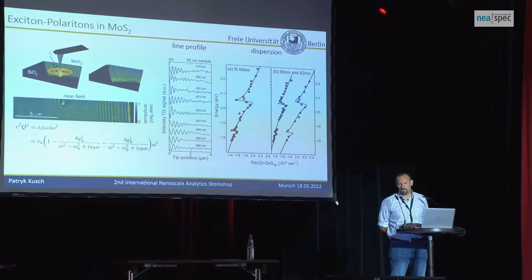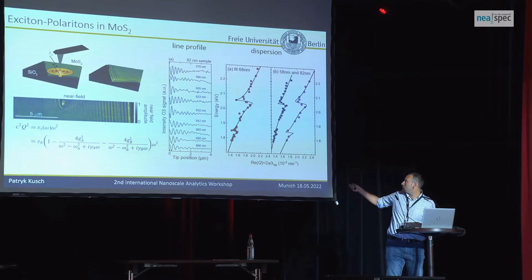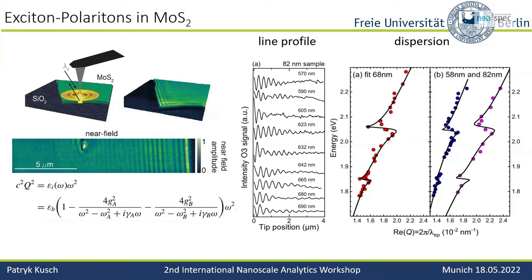We look at how the fringes change and use the dispersion equation. We get the dispersion relation for slabs of thick MoS2, about 17 nanometers thick. What we get is an upper and lower polaritonic branch — you can see it for both excitons, the A and the B exciton. You can study the dispersion relation for exciton polaritons; this was also done for MoS2 previously.